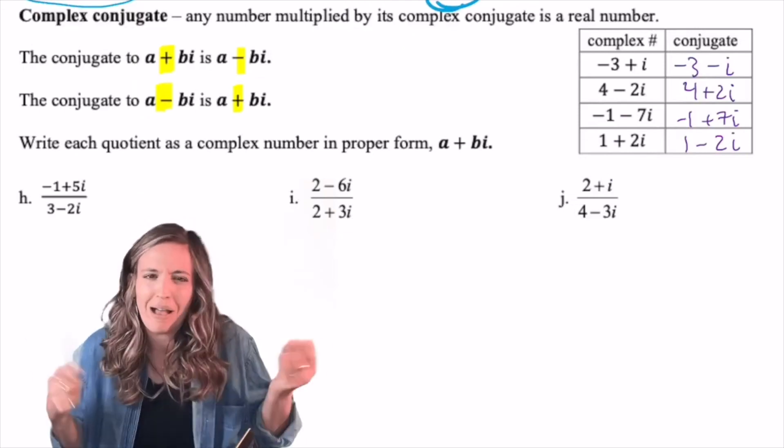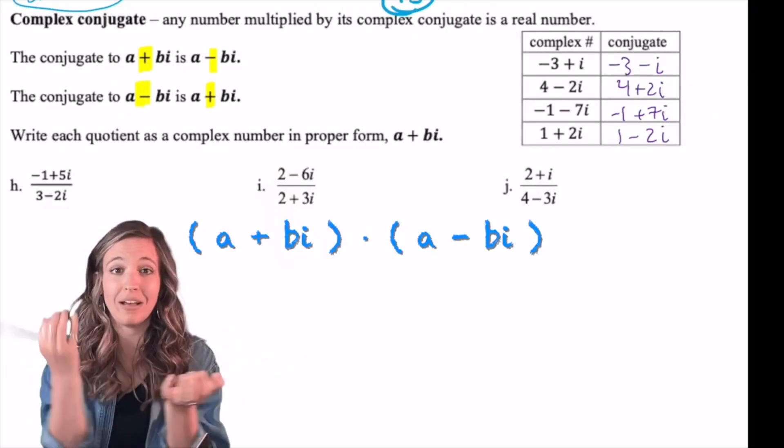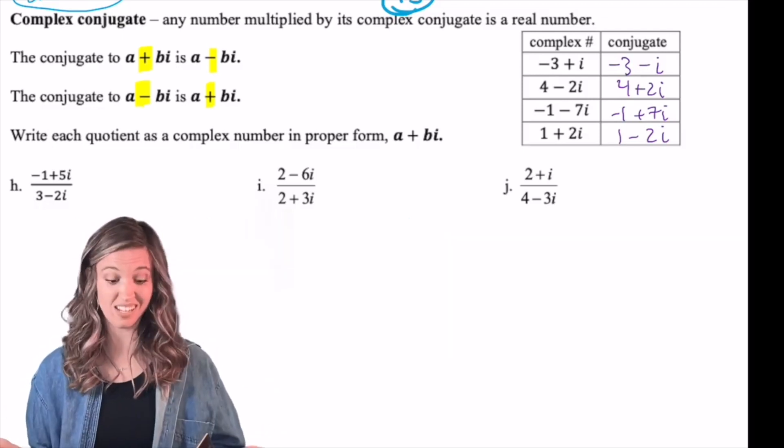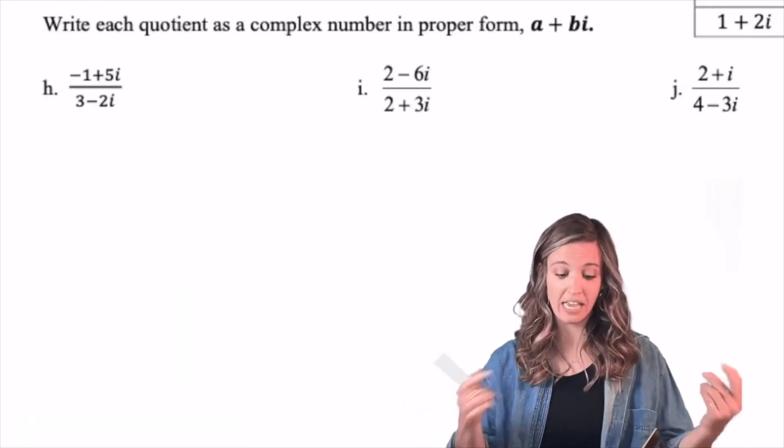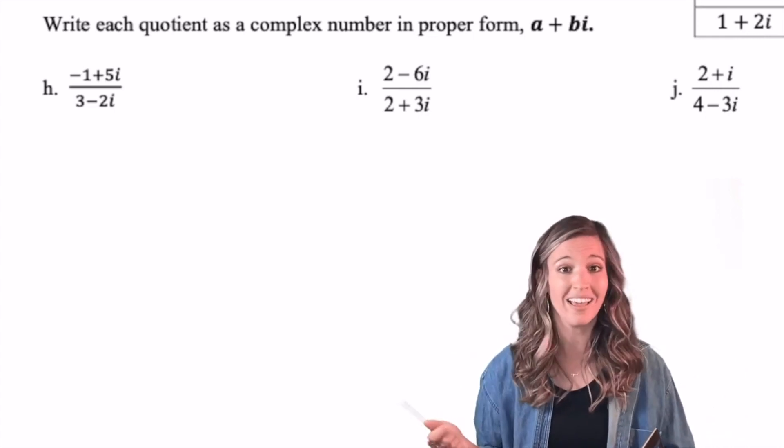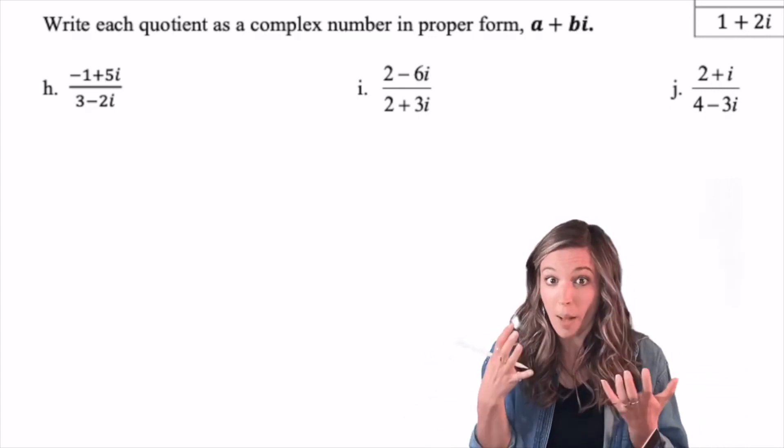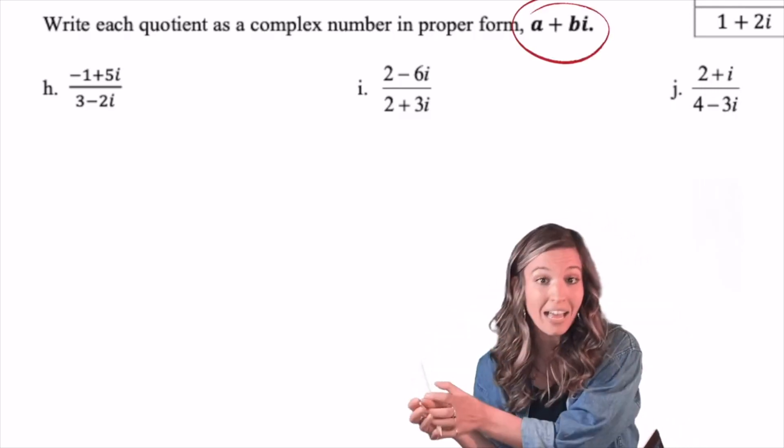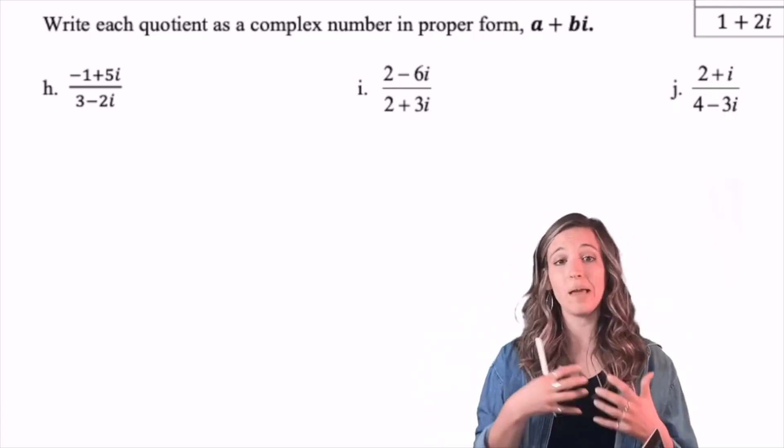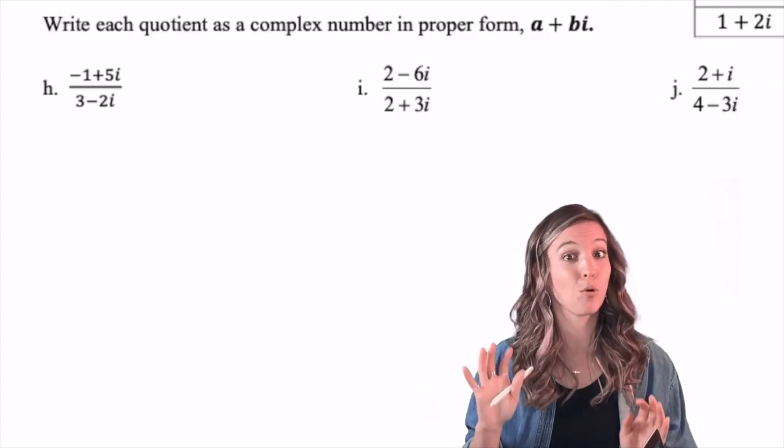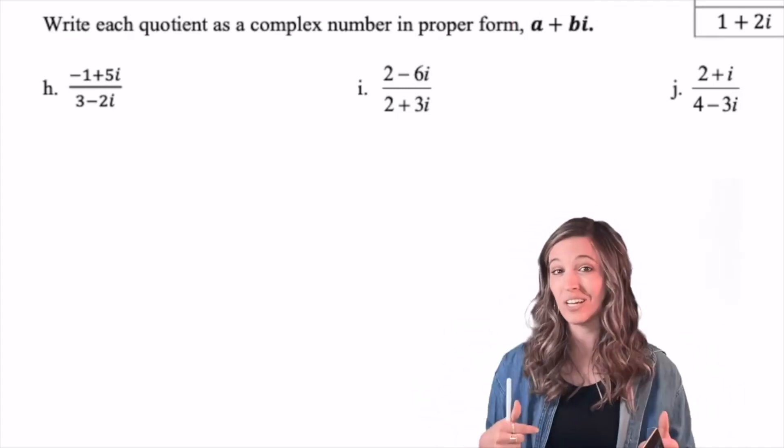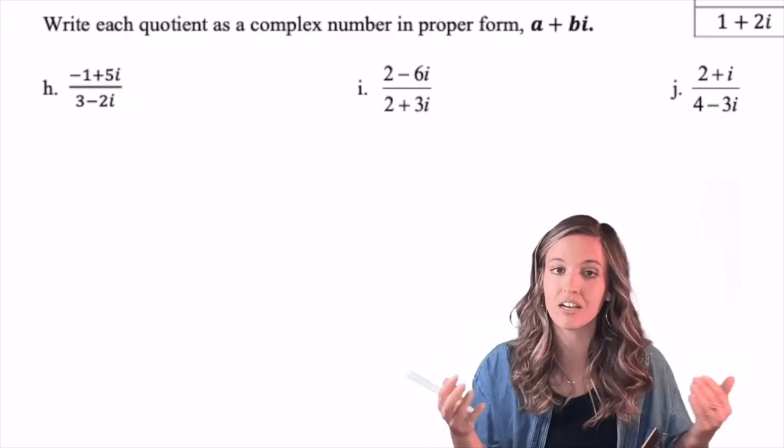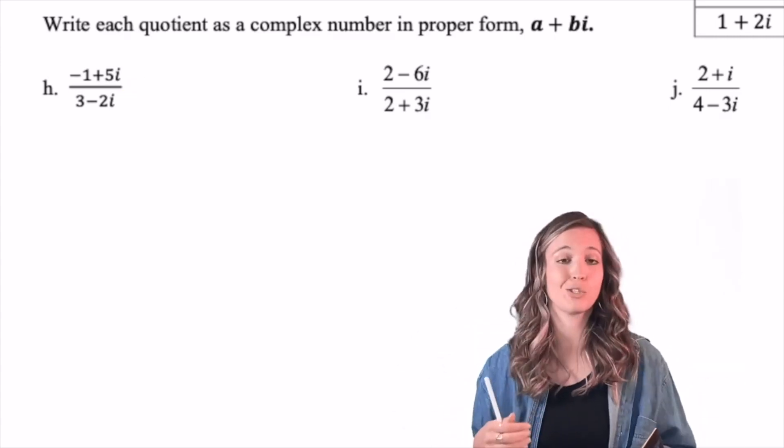Now, why would we need this? Why would I care that a complex multiplied by its complex conjugate is a real number? Well, check this next example. If I have a quotient -1 + 5i divided by 3 - 2i, I want to write that as a complex number in proper form. So that means I need a real part plus its imaginary part. In order to separate this into a + bi, a complex number's proper form, I need a real number in the denominator. So I could kind of force that using a conjugate. My denominator is 3 - 2i. What's the conjugate of 3 - 2i?